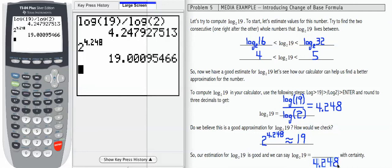Therefore, we can say that log base 2 of 19 equals 4.248 with certainty. If you look at the change of base formula in the table below this example, you'll see how to use the common logarithm—log of 19 over log of 2—to compute logs of any base.